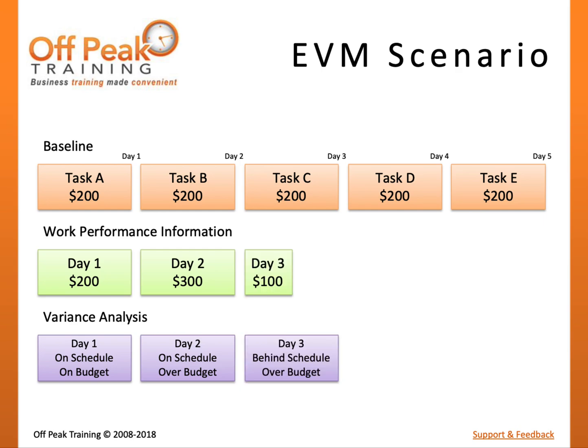On Day 3, you only complete half of Task C and have spent another $100. At this point, we are behind schedule because we should be done with Task C. Additionally, we have spent $600 but have only accomplished $500 worth of work. It seems we are behind schedule and over budget.